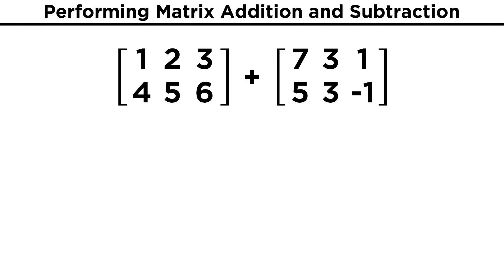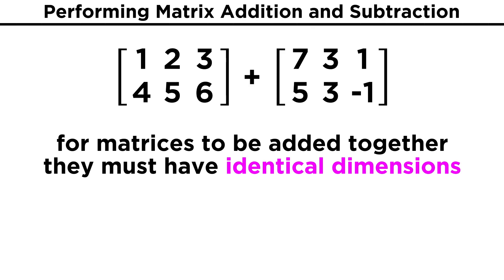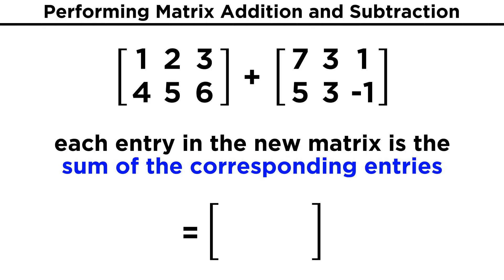But we can also add two entire matrices together. In order for this to work, the two matrices must have identical dimensions. That means the same number of rows, and the same number of columns. The reason this is the case is that in order to add two matrices together, we just generate a new matrix, and each entry is simply the sum of the entries for that specific position in the other two matrices.